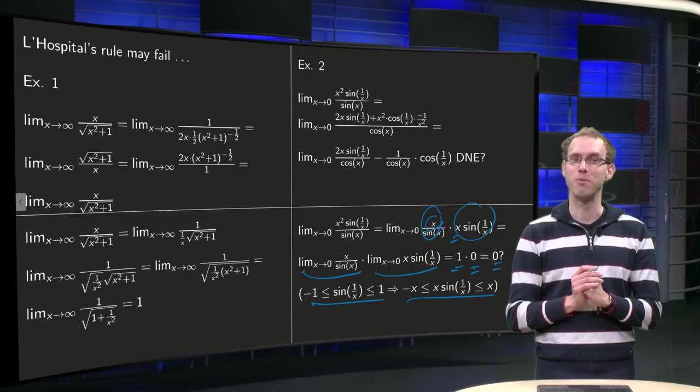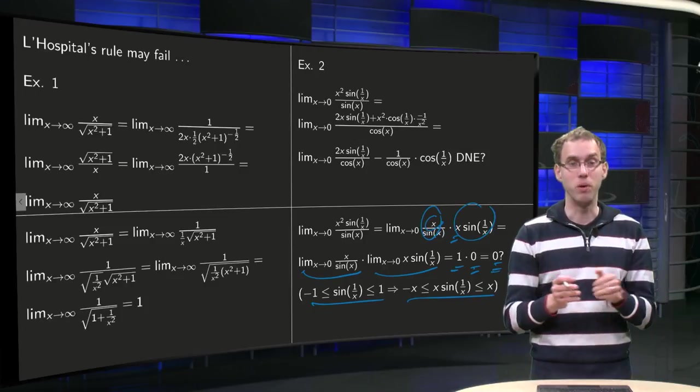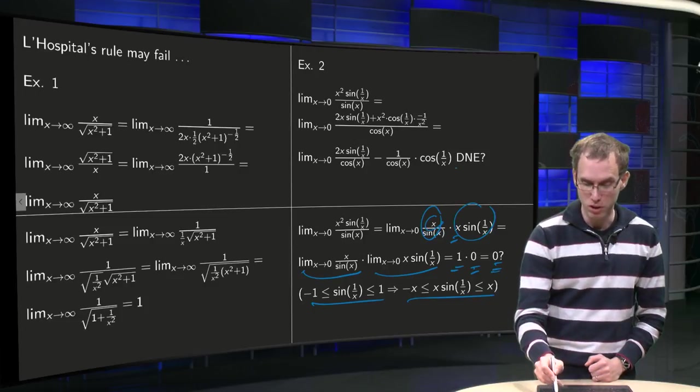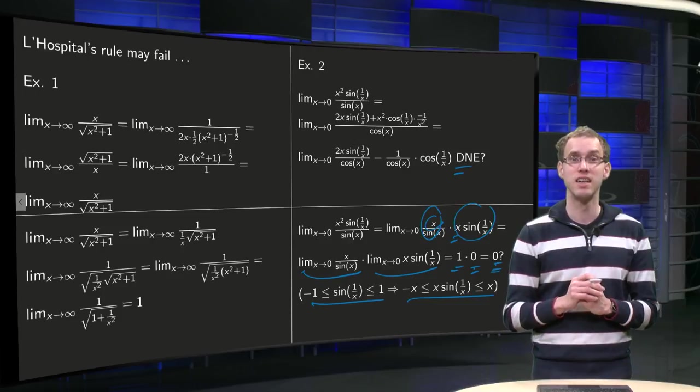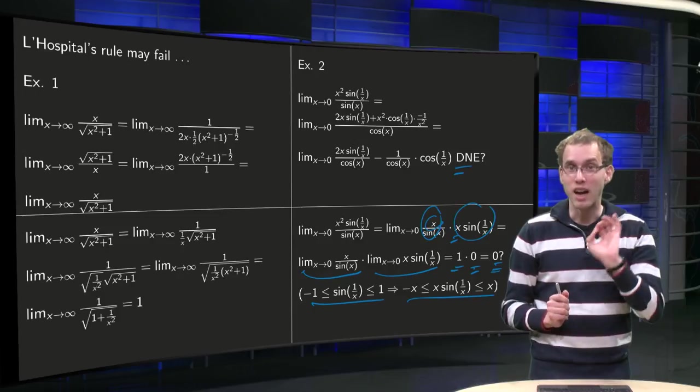So what's the correct answer? Here we have 0 using one type of rules, and here using L'Hôpital's rule does not exist. So which of the two is correct?